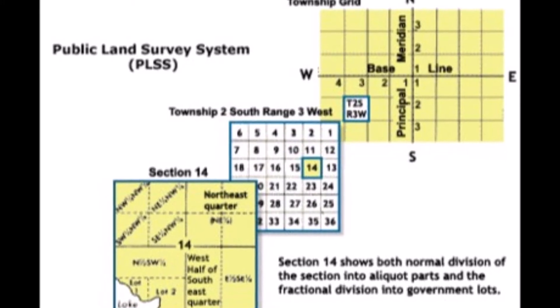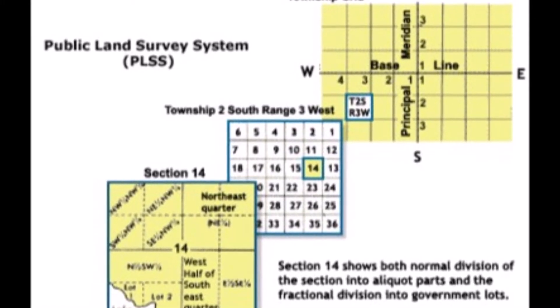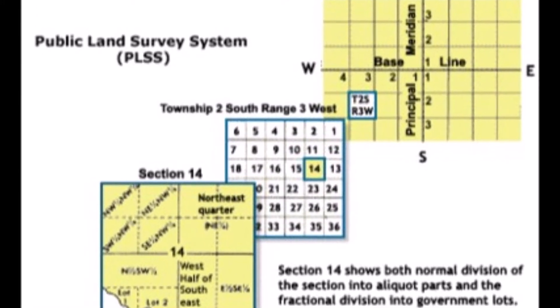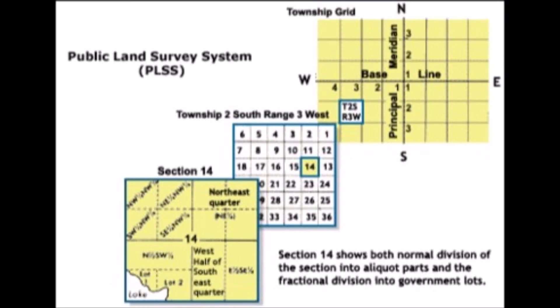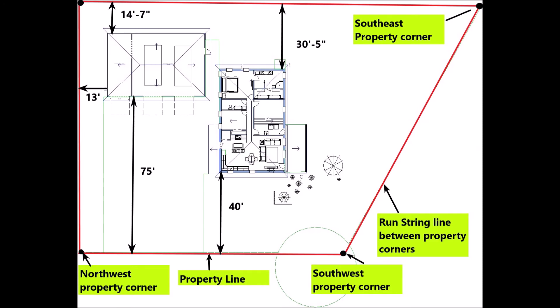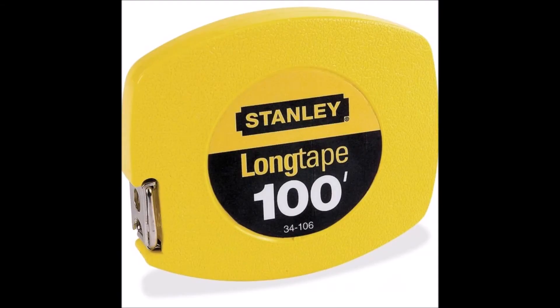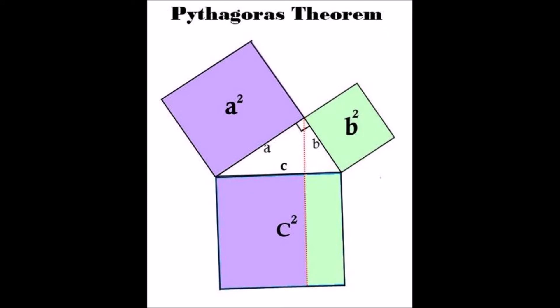Every town and city in the West has main street running directly east and west. Every township, county, and state line runs north and south, east and west. The only place it doesn't is because of a geological formation — either mountains or rivers. So you can lay out your house in this simple manner using a string line to establish your property line from your property corners, and then use a 100-foot tape measure with the Pythagorean theorem.